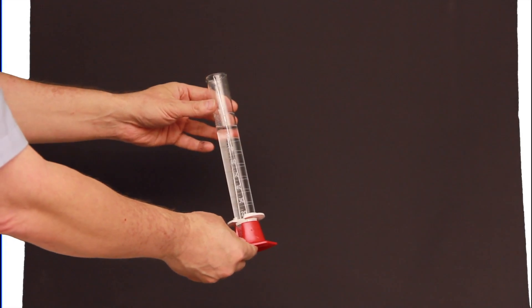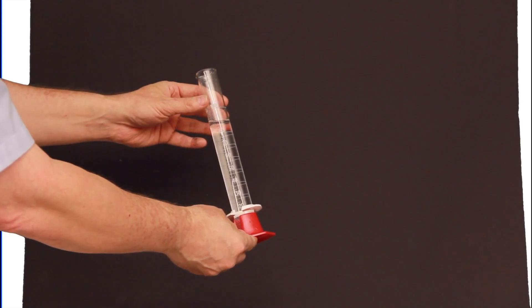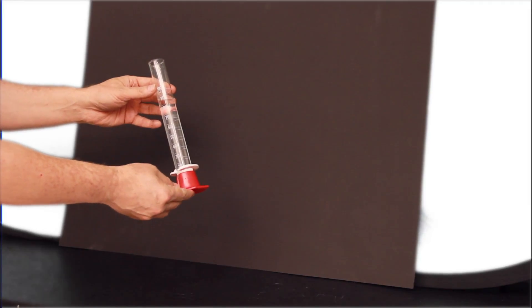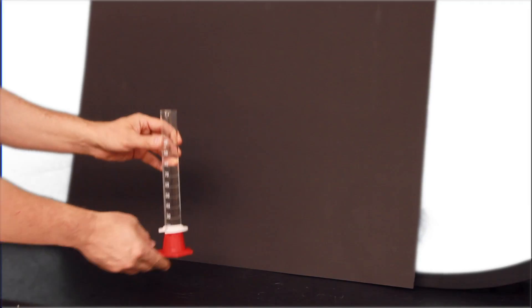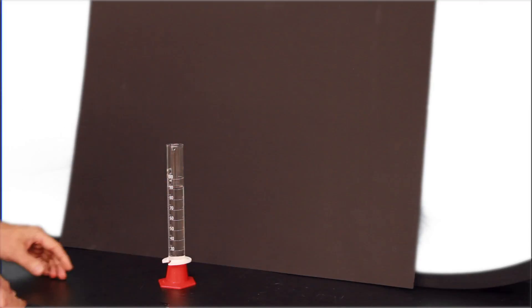Another thing to remember is to never read a graduated cylinder while holding it in your hands. This causes the meniscus to become slanted. The cylinder should always be read on a flat surface to get a proper reading of the volume.